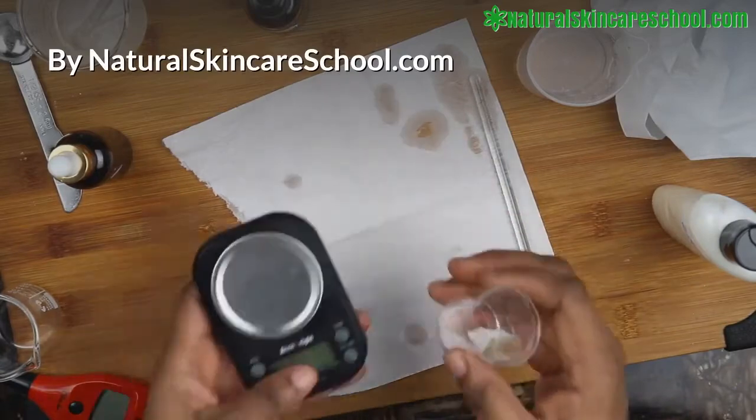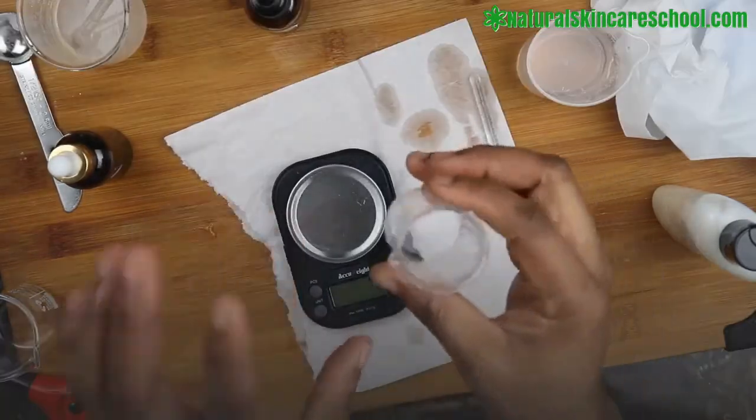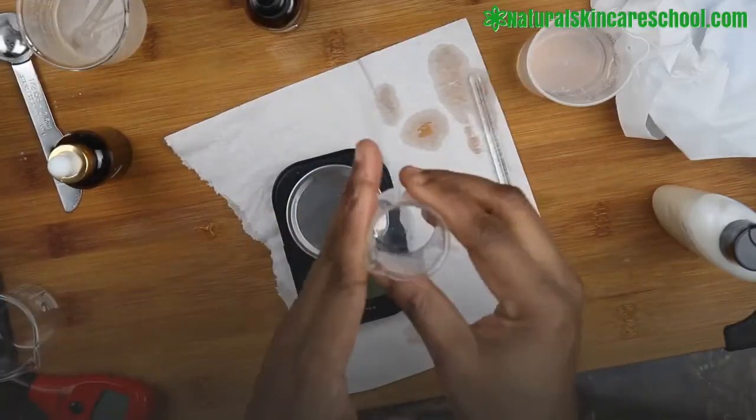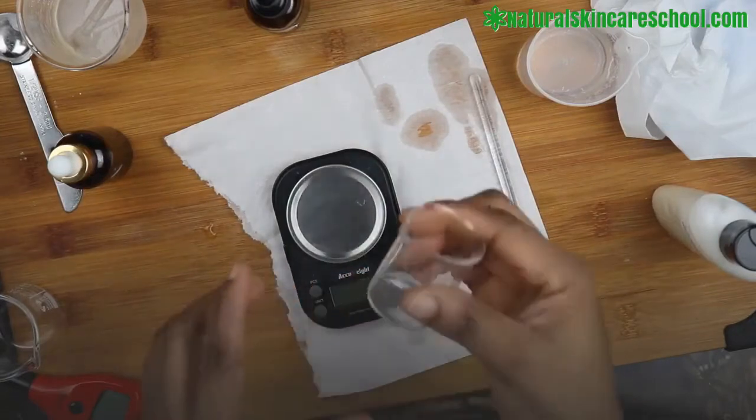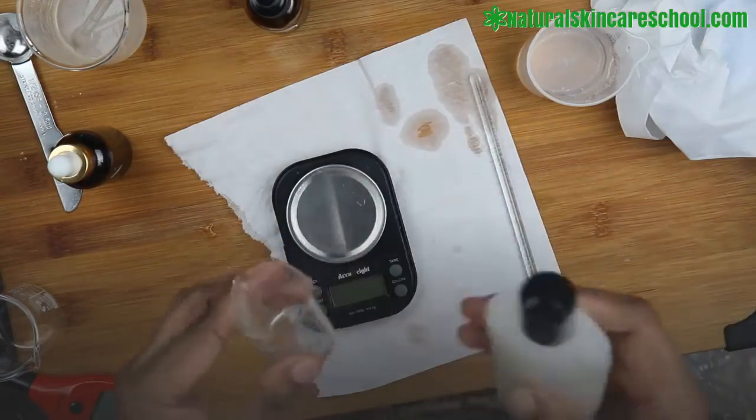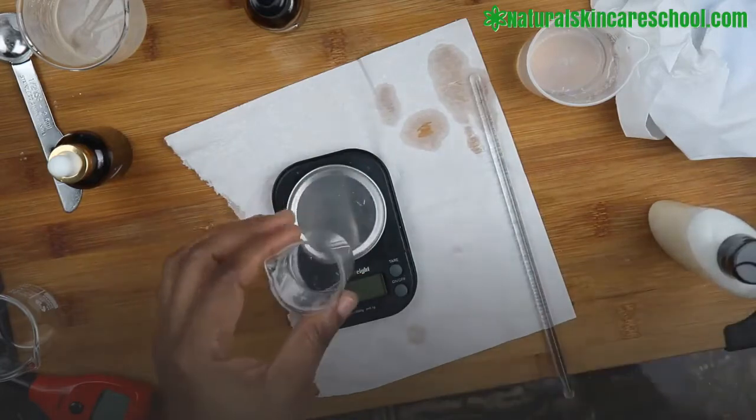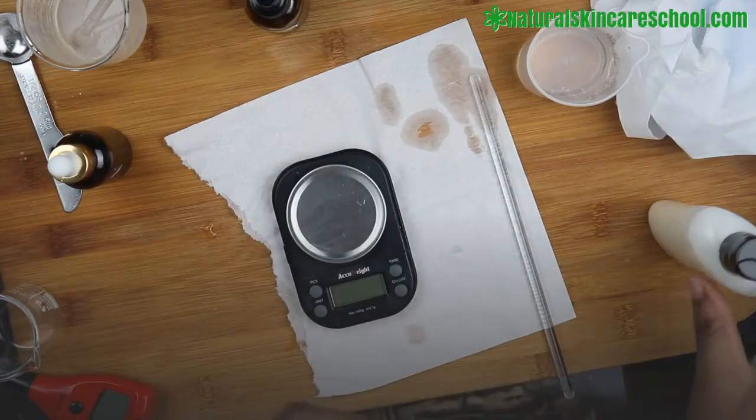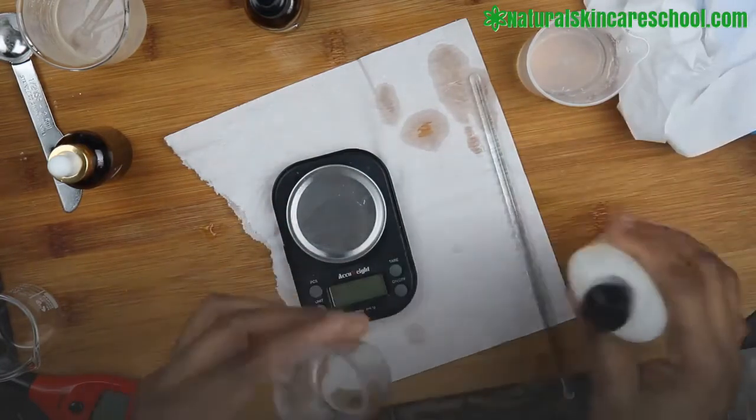To check the pH of your lotion, you need a scale, you need a beaker or anything you can put your mixture in. What we're going to do is take 1% of whatever lotion you have, then we're going to add 9% water to it. So we're taking one gram of the lotion and we add nine grams of water to it.